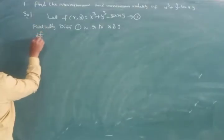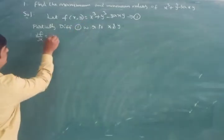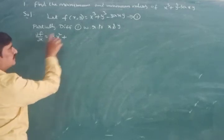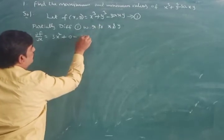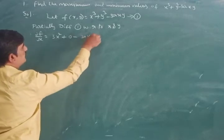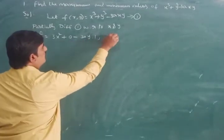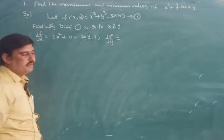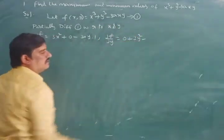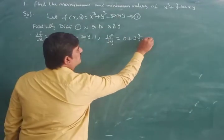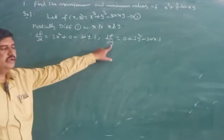Differentiating partially with respect to x: ∂f/∂x = 3x² − 3ay. Here, x³ differentiates to 3x², y³ has no x so it gives 0, and −3axy differentiates to −3ay since 3ay is constant and the derivative of x is 1. Similarly, differentiating with respect to y: ∂f/∂y = 3y² − 3ax, since y³ differentiates to 3y² and −3ax is constant times y giving −3ax.